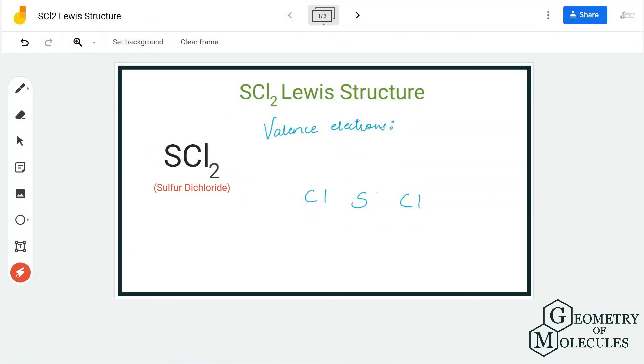Hi guys, welcome back to our channel. In today's video we are going to look at the Lewis structure for SCl2 molecule, which is also known as sulfur dichloride. To start with its structure, we are first going to look at the total number of valence electrons.